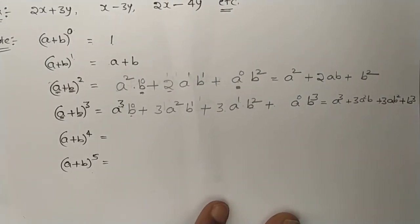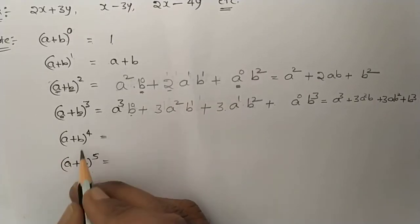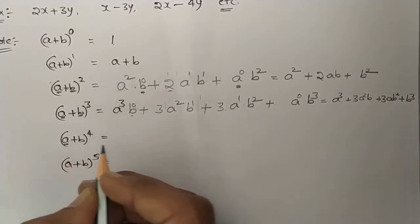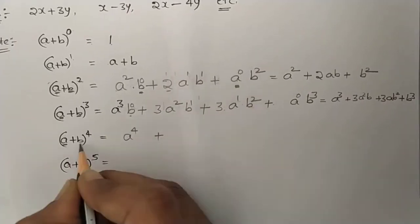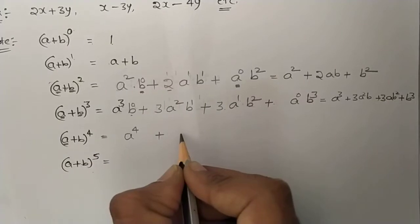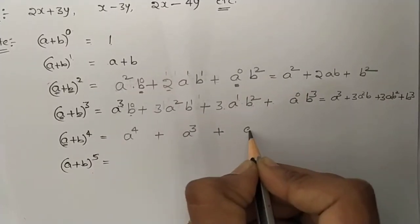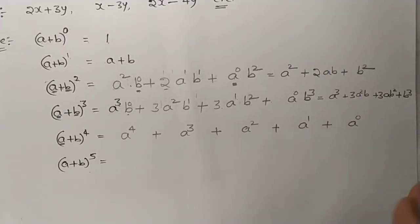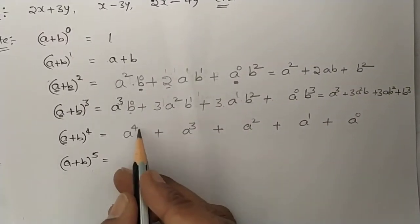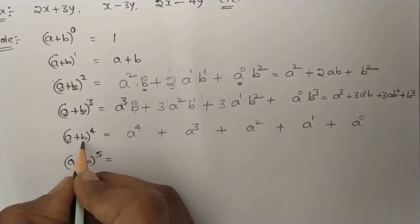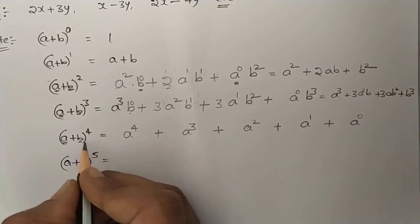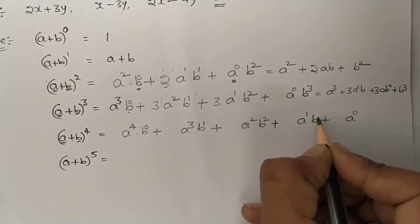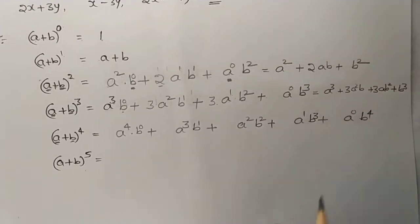Now, what about (a + b)⁴? The power of the first term decreases: a⁴, a³, a², a¹, a⁰. The power of the second term increases: b⁰, b¹, b², b³, b⁴. So we can write out all the terms. But what about the coefficients?